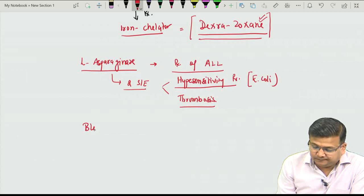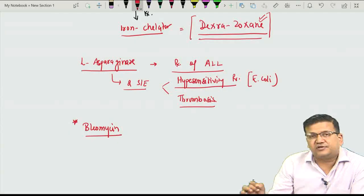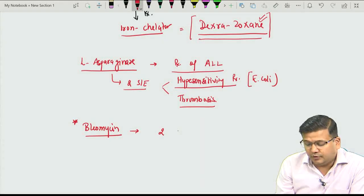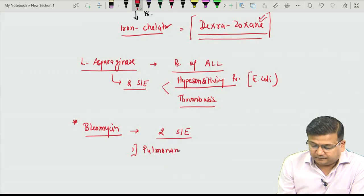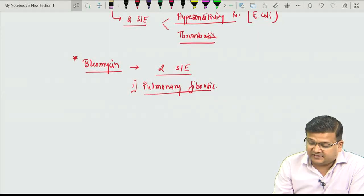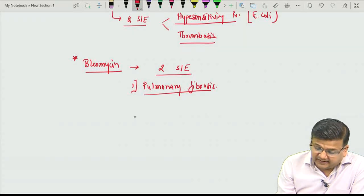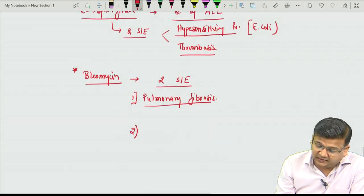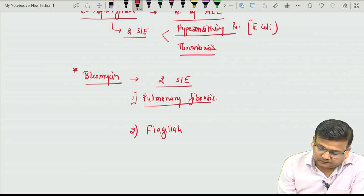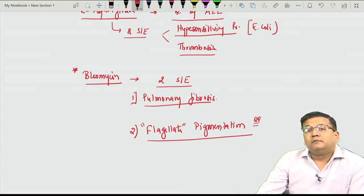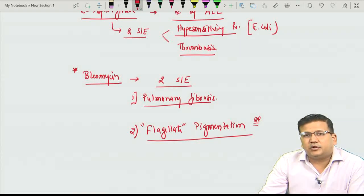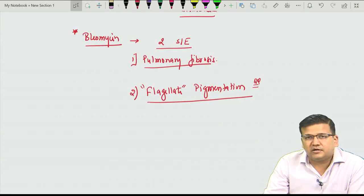Another option is bleomycin, a very important drug regarding side effects. Bleomycin has two important side effects commonly asked. Number one, and most important, it causes pulmonary fibrosis — this is the dose-limiting toxicity of bleomycin. Second is a particular pattern of pigmentation known as flagellate pigmentation. This word is very important and was recently asked in an AIIMS question. So bleomycin has toxicity in the lung and skin, resulting in flagellate pigmentation and pulmonary fibrosis.